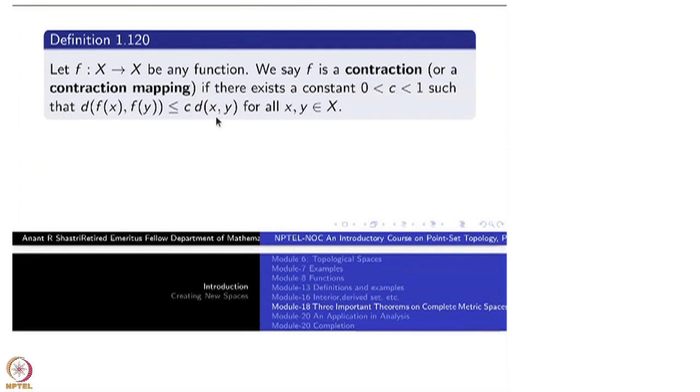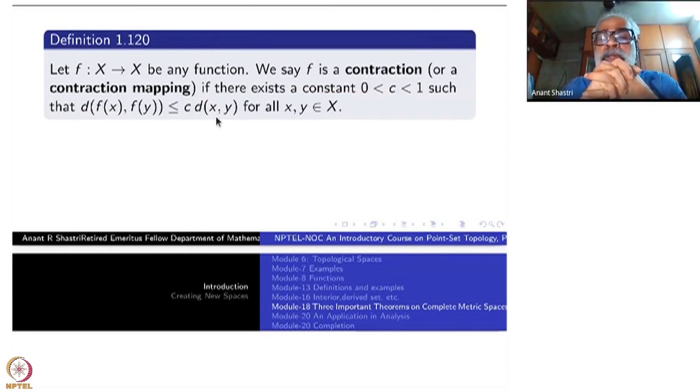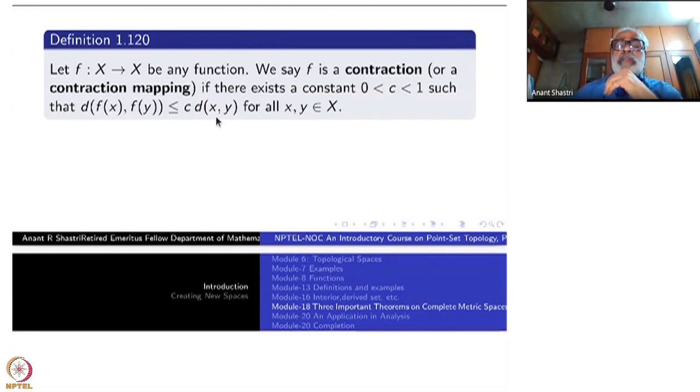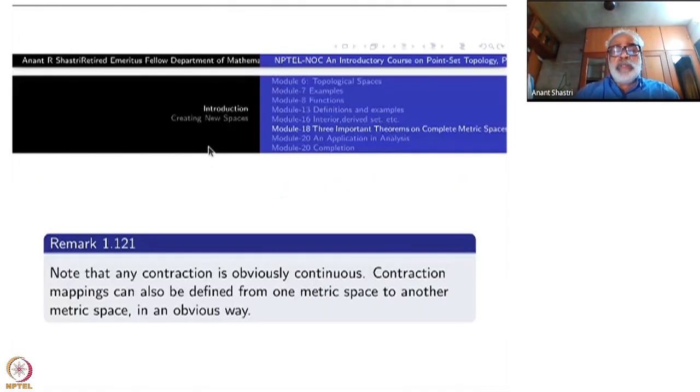If you take a layman's language, a map of say your campus or a country or just a state. If the map is up to scale, definitely it will be a contraction mapping. From the actual object of which it is a map to the map, you can think of holding the map in your hand sitting, standing in the country. So the map is inside. So the function f is from the country into the country, but it is a contraction mapping. Now what does this theorem say?